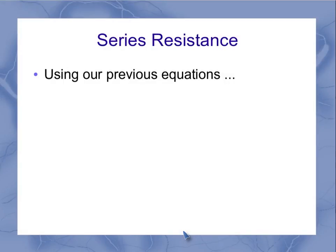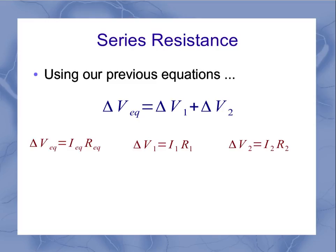Now we come to series resistance. We're going to use our previous equations to understand this, starting with this voltage equation. The voltages add up, but I can also remember that each individual voltage was related to the current and resistance through that particular device. I've got that for resistor one, resistor two, and the equivalent resistance for the whole circuit.